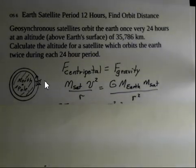It's moving in circular motion. We're going to assume the orbit is a circle and there is a centripetal force required for the satellite to move in a circle. That centripetal force is supplied by the force of gravity between the Earth and the satellite.